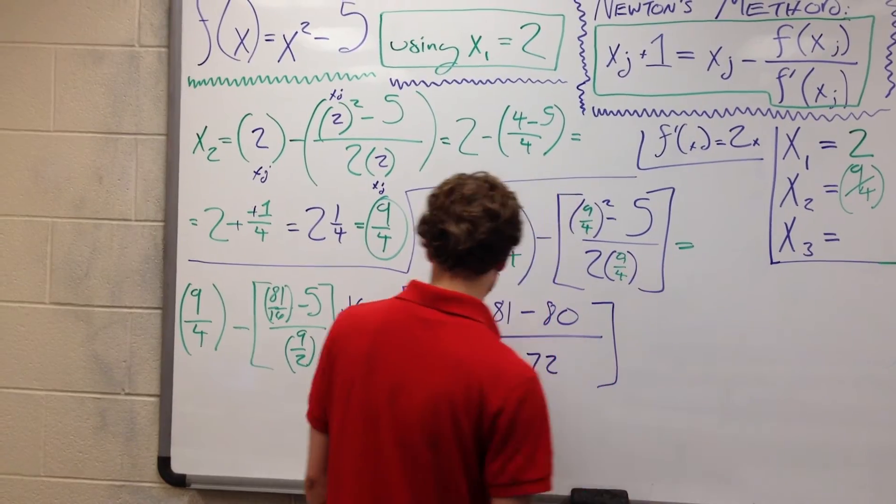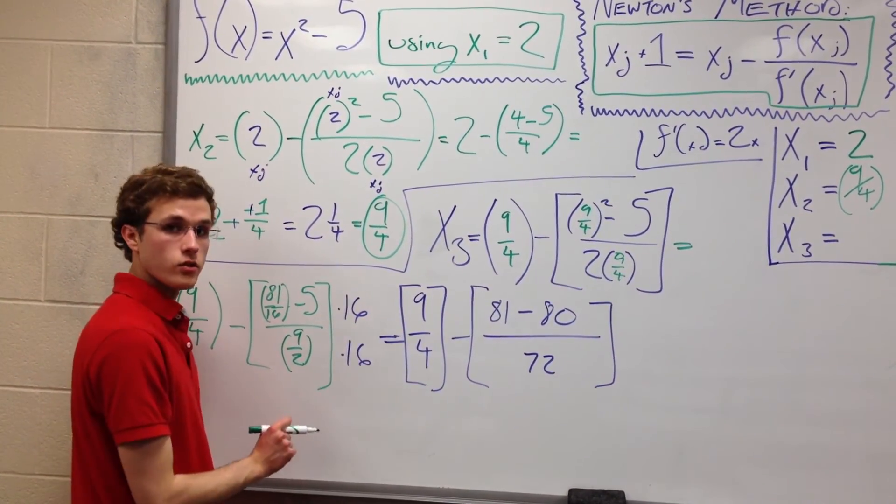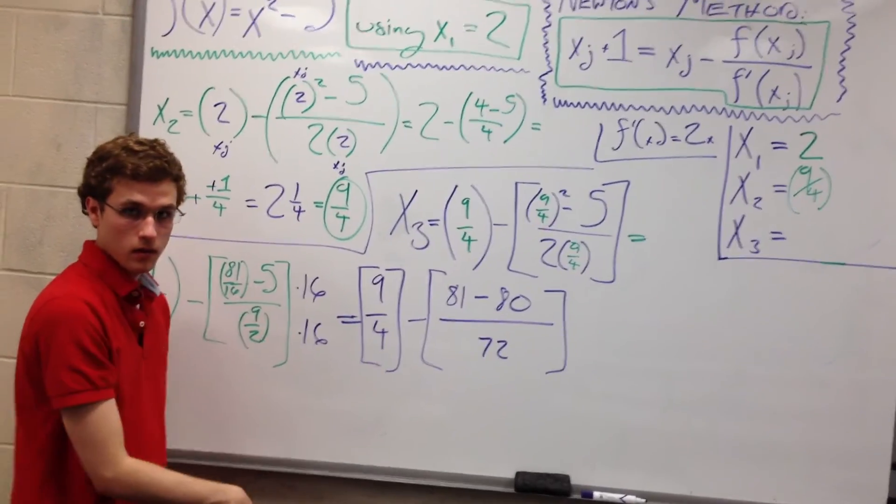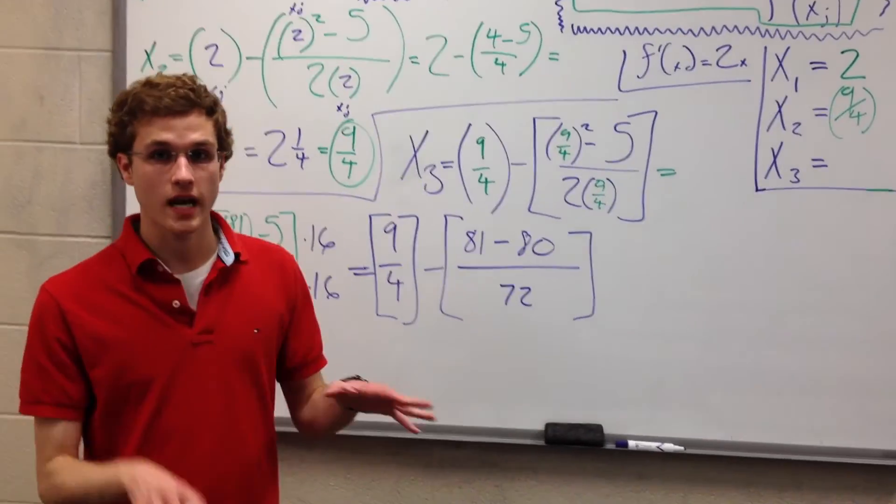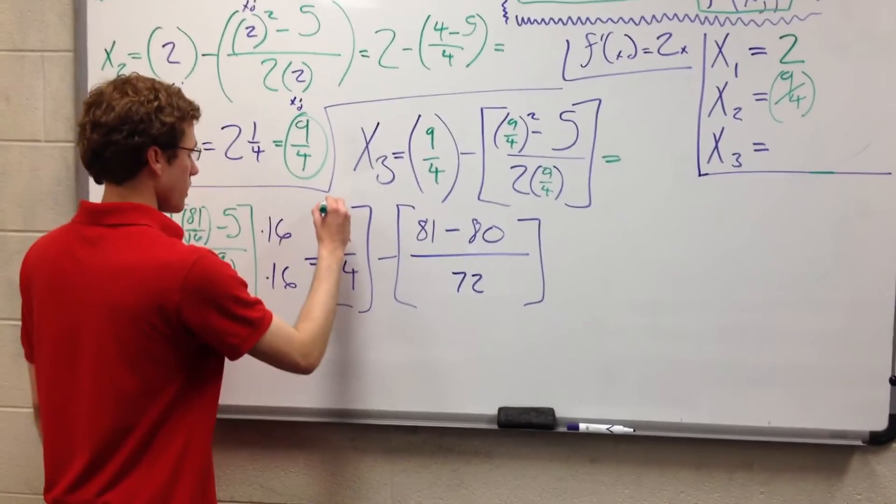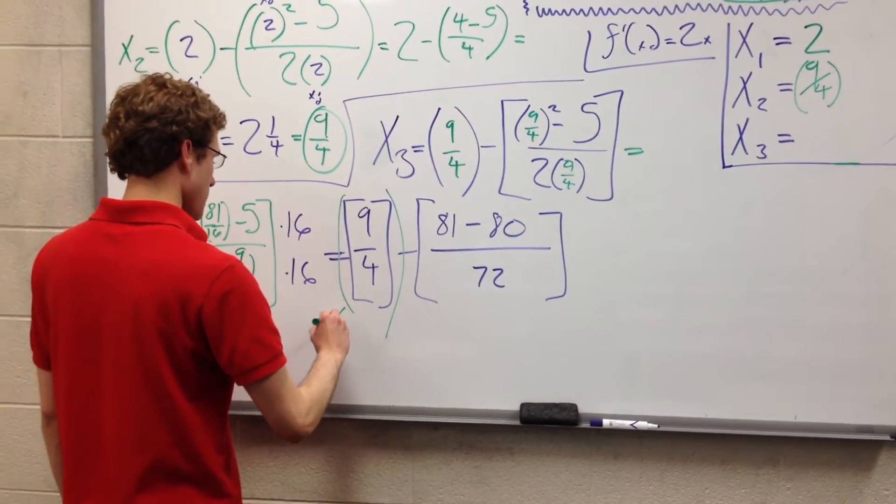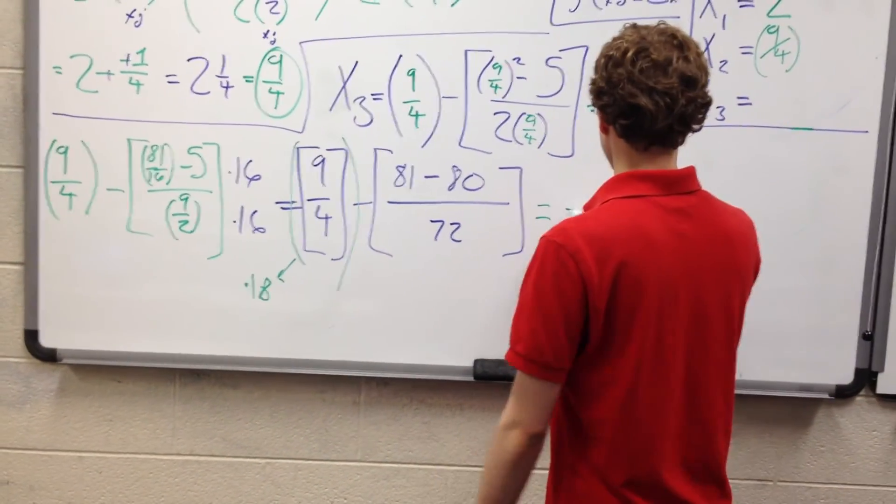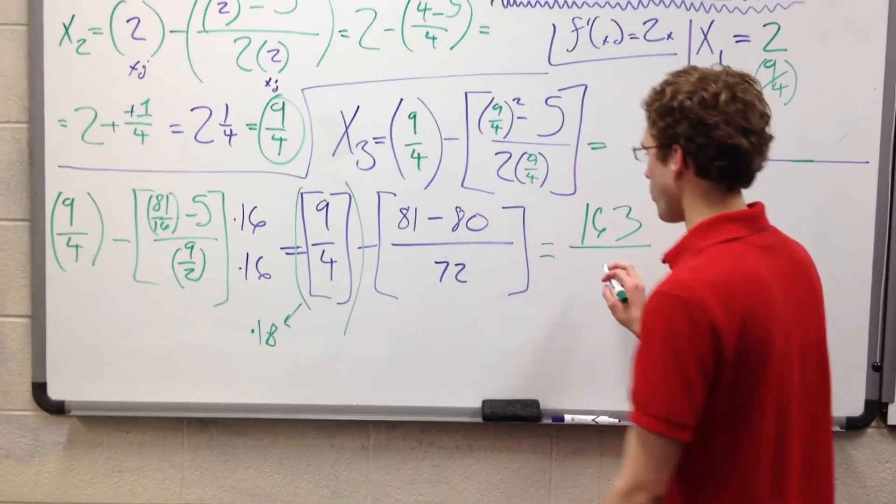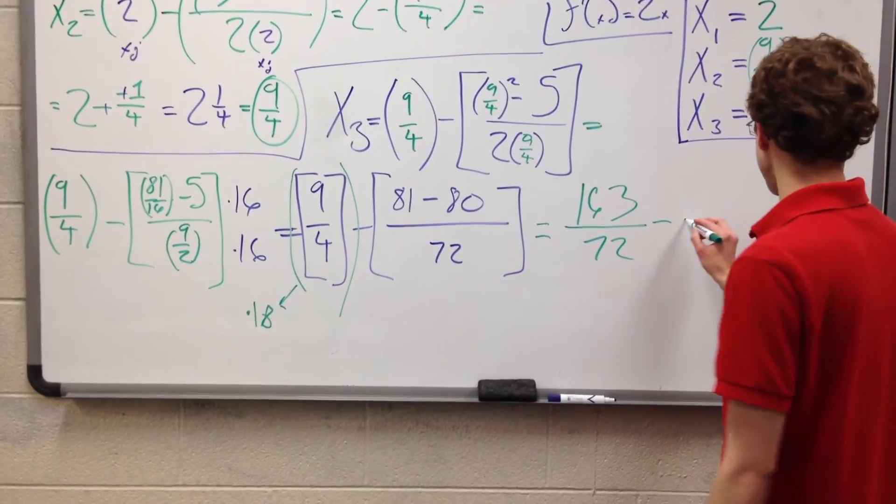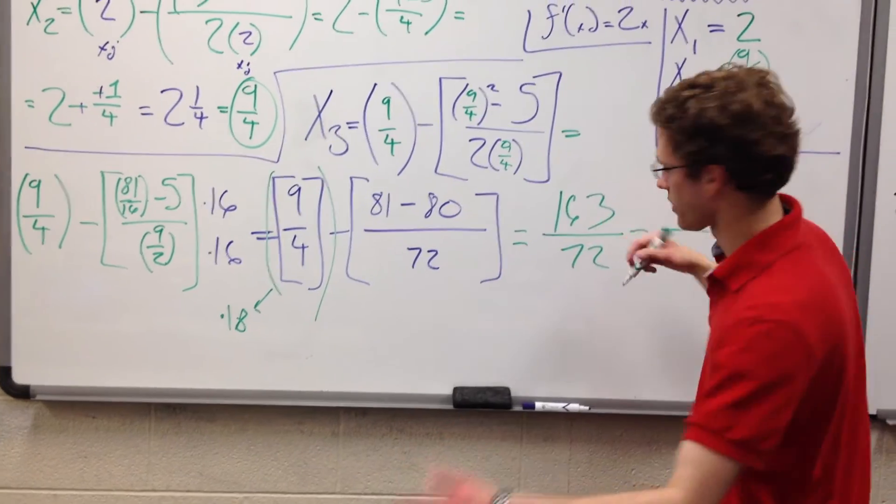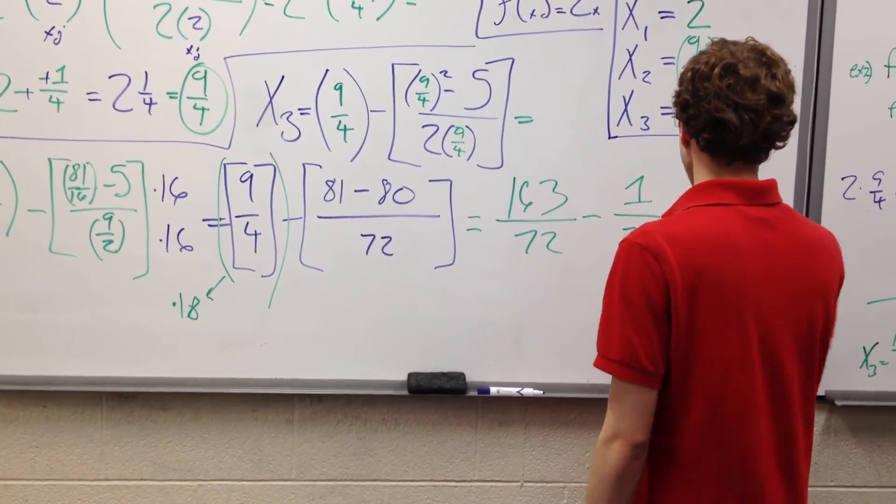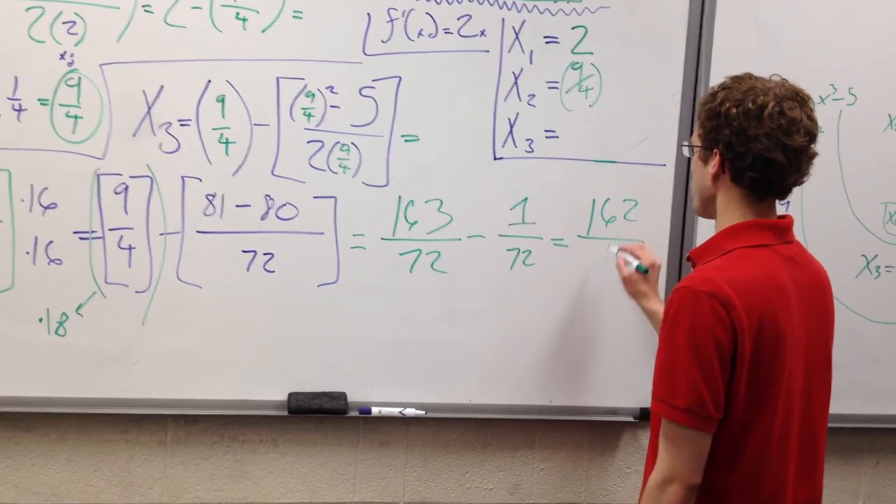Still kind of ugly. Let's multiply all of this by 18 to give us a common denominator between 4 and 72, because 4 × 18 = 72. We're going to take all of this and multiply it times 18. This is going to leave us with 163/72 minus 1 (since 81 - 80 = 1), which is minus 1/72, leaving us with 162/72.